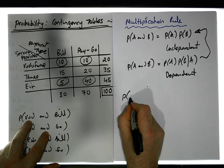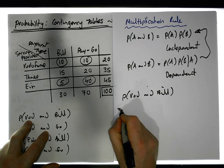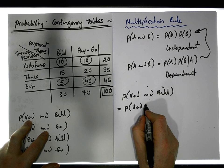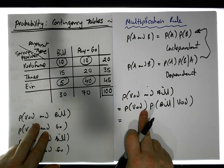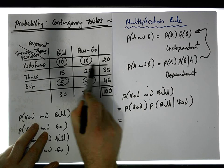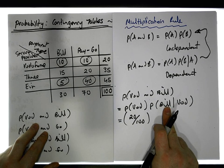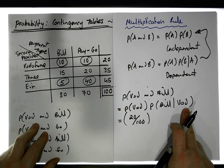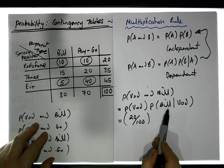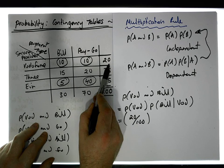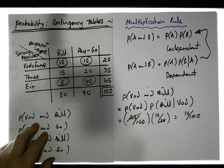Let's calculate P(Vodafone and bill pay) using the second rule. That gives us P(Vodafone) × P(bill pay | Vodafone). The probability of being a Vodafone customer is a marginal probability — there are 20 Vodafone customers out of 100, so 20/100. Then, knowing they're Vodafone, we look at just those 20 people: 10 are bill pay, so P(bill pay | Vodafone) = 10/20. These cancel, giving us 10/100.